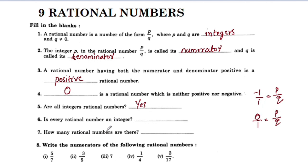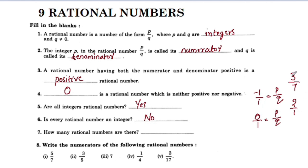Is every rational number an integer? No. For example, 2 by 1 is a rational number and an integer, but a decimal number like a fraction such as one-half is not an integer. So not all rational numbers are integers.